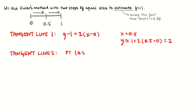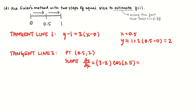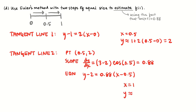My point is x equals 0.5 and y equals 2. My slope will be: dy/dx equals 3 minus y times the cosine of x. So that's 3 minus 2 equals 1, and cosine of 0.5 is about 0.88, so the slope is 0.88. Then I write my equation: y minus 2 equals 0.88 times (x minus 0.5). I take my second step and plug in x equals 1: y is approximately equal to 2 plus 0.88 times (1 minus 0.5). That's half of 0.88, which is 0.44, so my approximate value is 2.44, which is probably a lot closer to the true value.